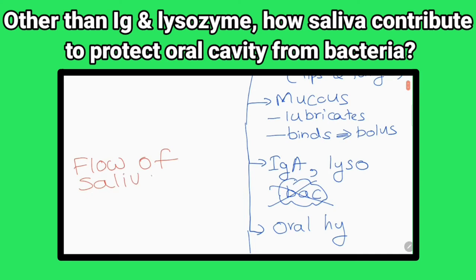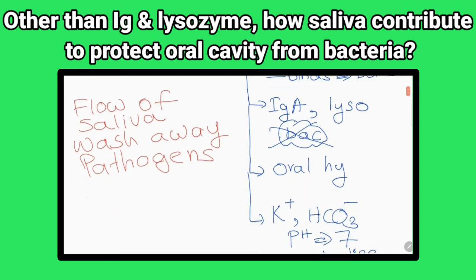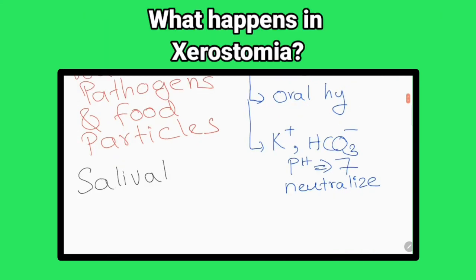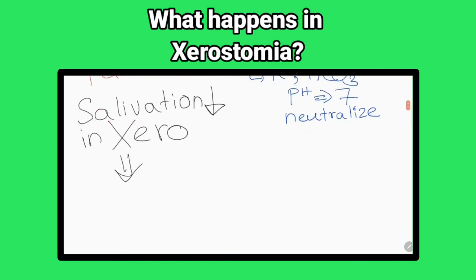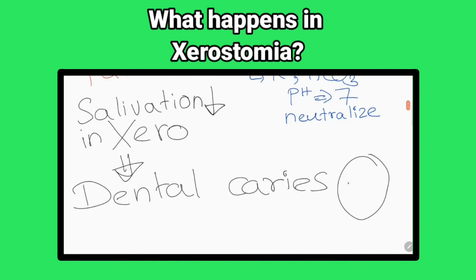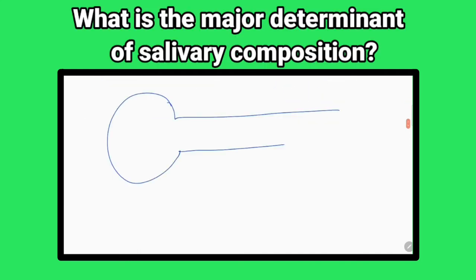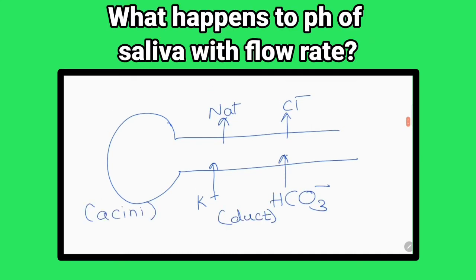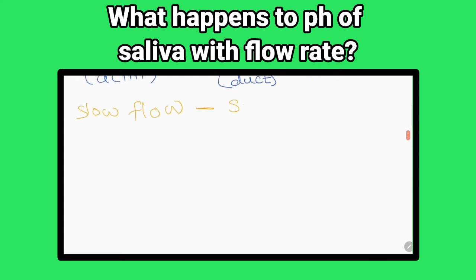Other than immunoglobulins and lysozyme, how does saliva contribute to protecting the oral cavity from bacteria? The flow of saliva washes away pathogenic bacteria and food particles. What happens in xerostomia? In this condition there is a deficiency of salivation, which causes a high incidence of dental caries. What is the major determinant of salivary composition? The flow rate.